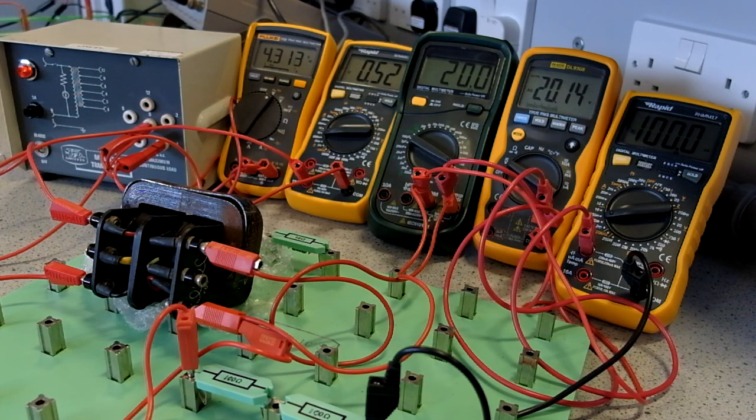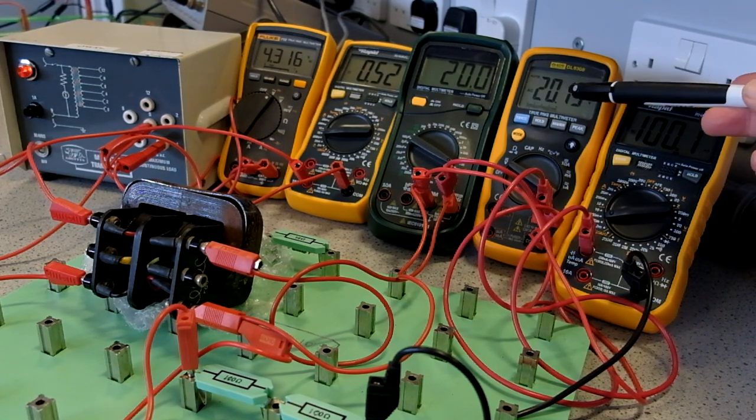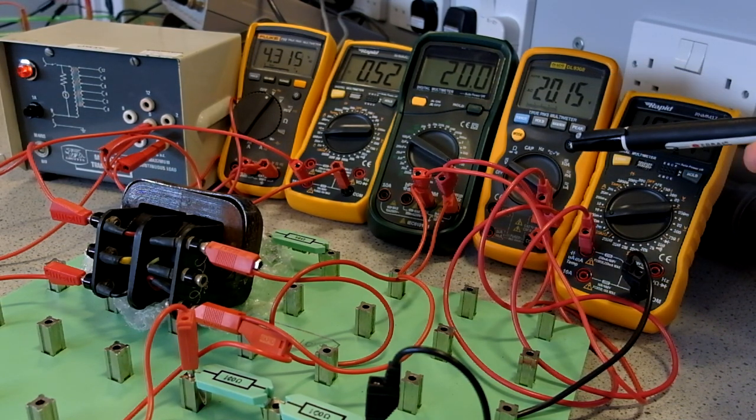So what we have, if we multiply our input voltage of 4.3 by 5.2, that would suggest that we should have a voltage coming out of 22.3 volts. Why have we not got 22.3 volts coming out?